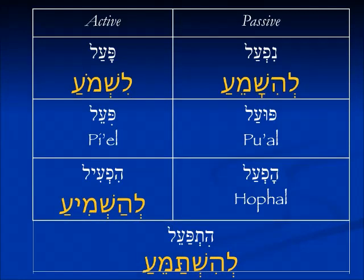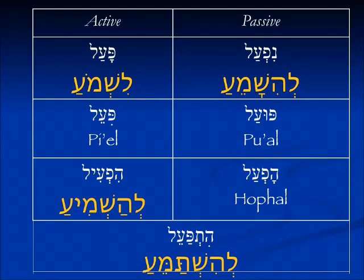Again looking at the root shama, to listen — the Pa'al ends in Ayin, so we're going to get an extra vowel in every Binyan. L'shmo'ah, to listen. In the Nifal: l'hishame'a, to be heard — the news was heard. We have the Hey at the beginning for the Nifal, ends in Ayin, it gets the extra Patach. In the Hifil: l'hashmiah — you have the Hey and Yud for the Hifil and the extra vowel under the Ayin, to announce, to cause other people to hear. And there's also a Hitpa'el form: l'hishtame'a — we have the reversal of the letters, the Shin comes before the Tav, but you still have the extra vowel at the end.